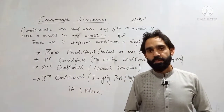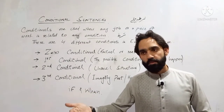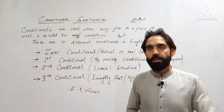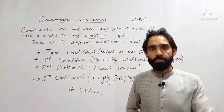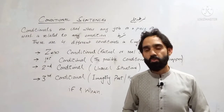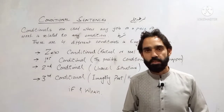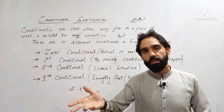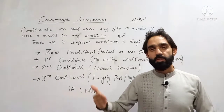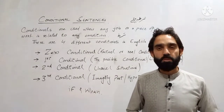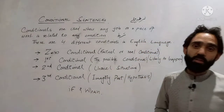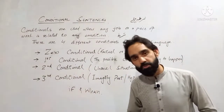ایک اور مثال: کچھ دوستوں نے پکنک کا پروگرام بنایا اور چلے گئے، لیکن آپ کو پتا نہیں تھا۔ وہ پکنک منا کر آ گئے اور اب آپ کہتے ہیں: 'اگر مجھے پتا ہوتا تو میں بھی آپ لوگوں کے ساتھ پکنک پر چلا جاتا۔' یہ گزرے وقت کی بات ہے — جو کام ہو چکا ہے، ہم صرف اس کی بات کر رہے ہیں۔ So these are all the different types of conditional sentences.